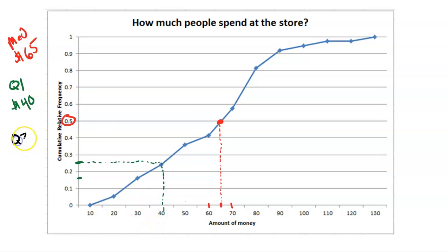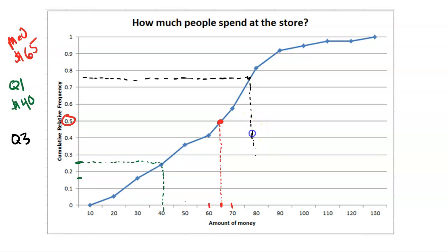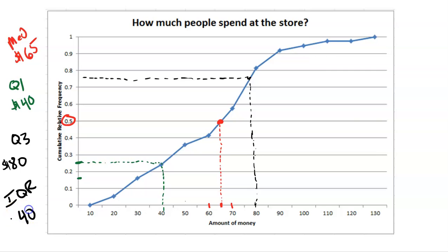So I can actually find the IQR. The IQR is Q3 minus Q1, which is 80 minus 40, so that would also be $40. Simple — this is so easy and so cool.